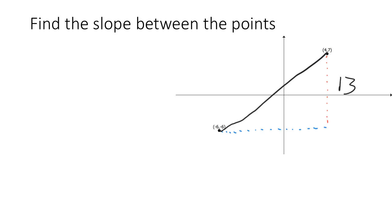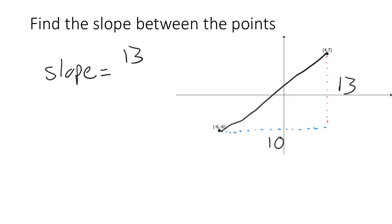Horizontally, we started at a position of negative 6 and we stopped at a position of positive 4, so our change was 10 — we went 10 units in the positive direction horizontally. Here we have our change in y, and here we have our change in x. So our slope is the change in y, 13, divided by the change in x, 10.